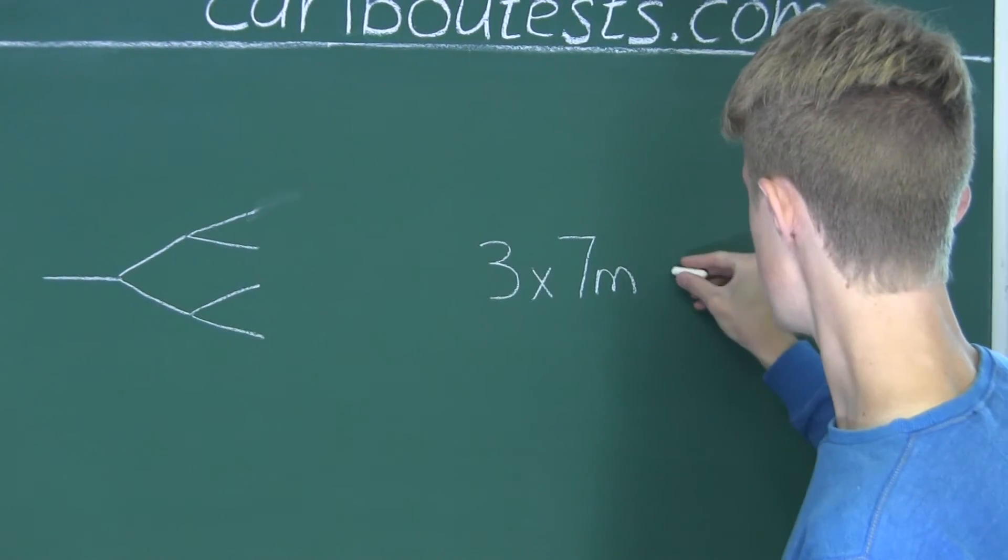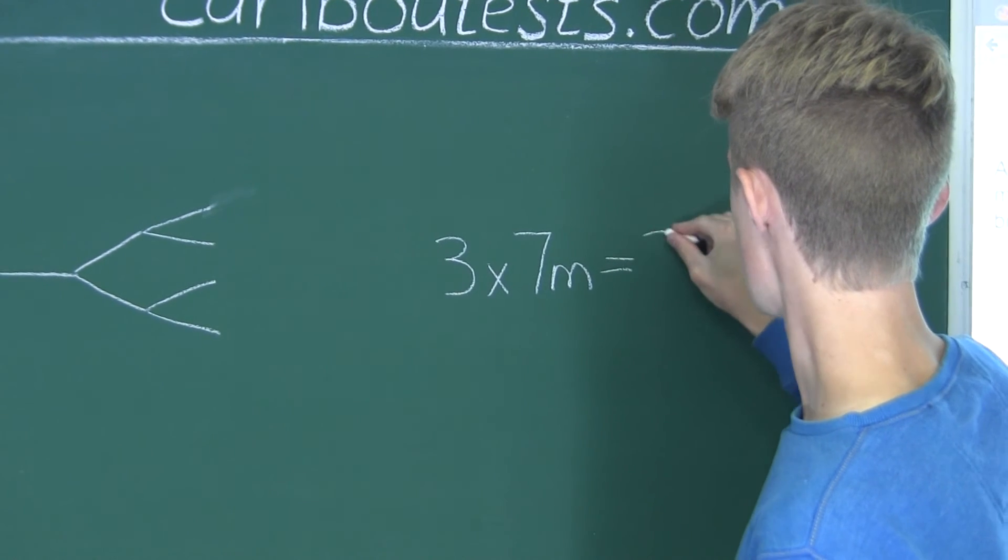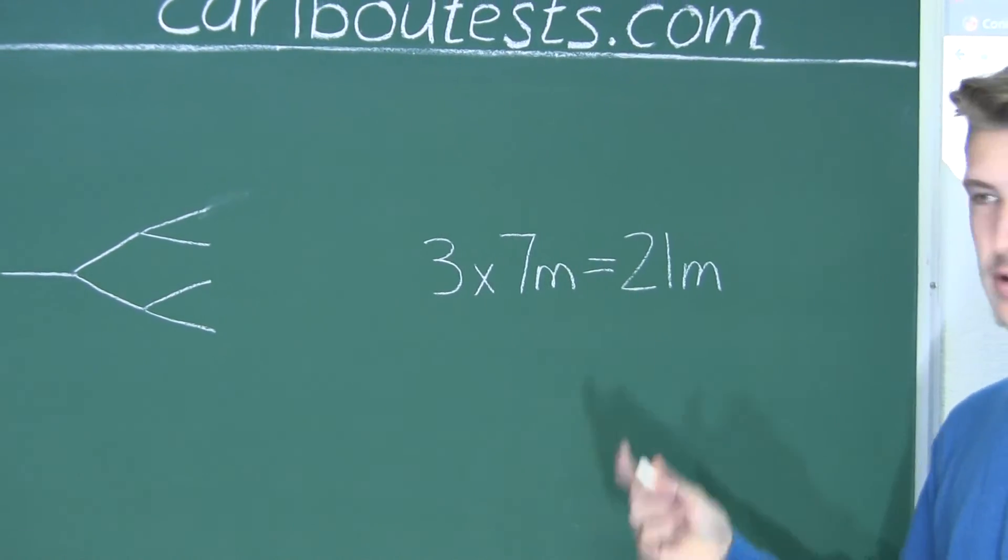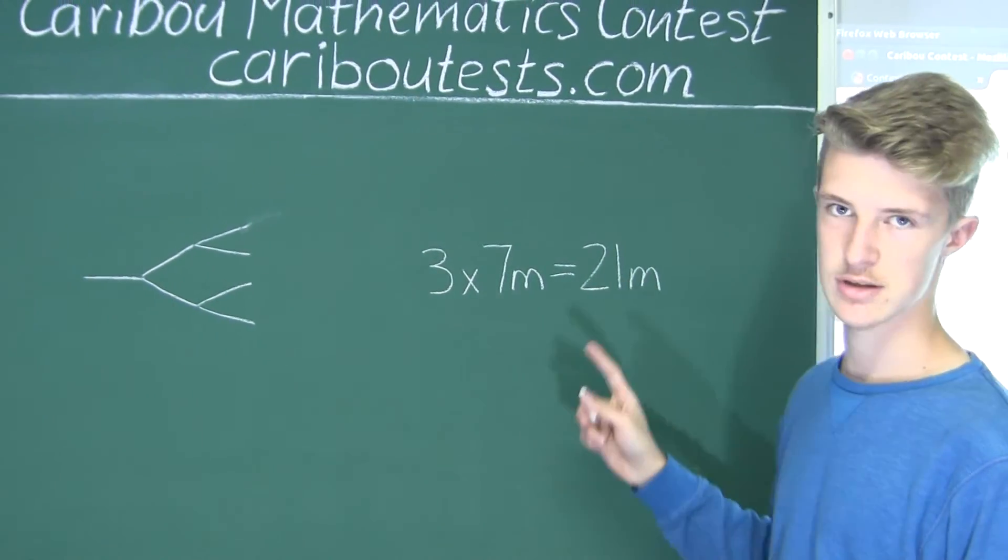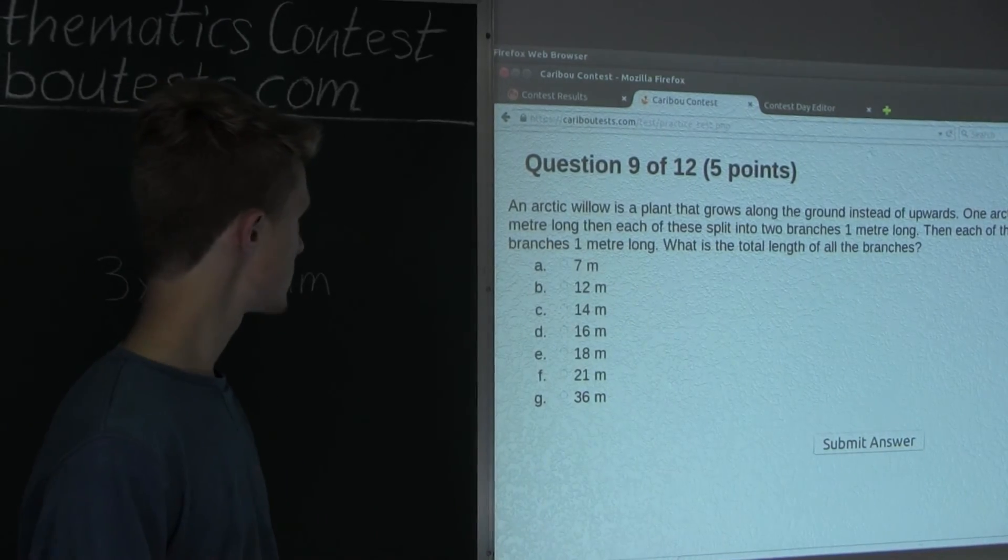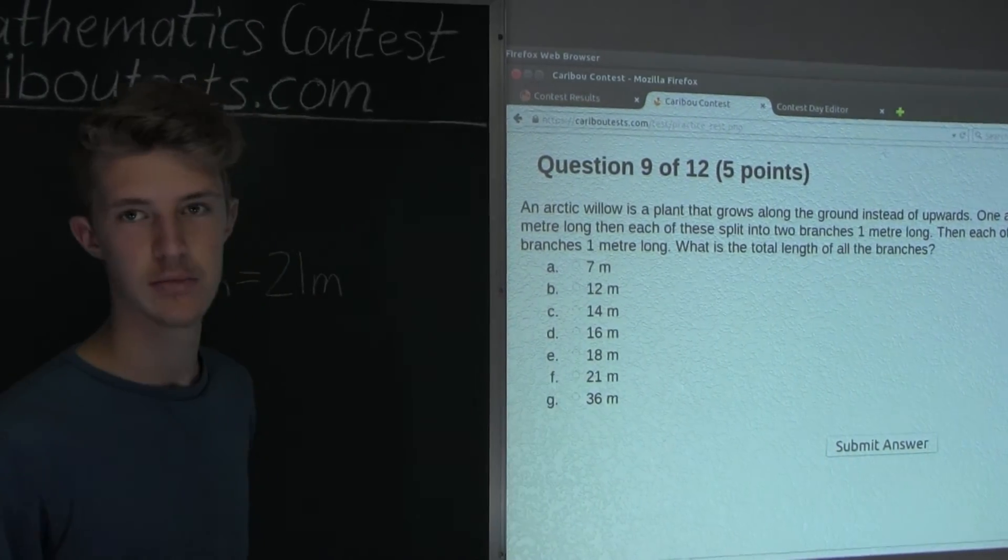So we have three times seven meters is equal to 21 meters. So the answer is 21 meters, which is the total length of all the branches. So the answer is F, 21 meters.